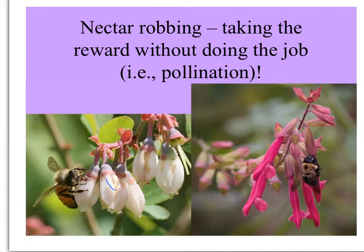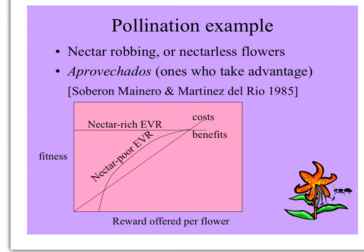Here you can see bees doing this dastardly deed, and here you can see the holes made by the robbers. Here's a bee too small to get to the nectar legitimately — it would have to go in through the front — but it's just going in from the bottom and taking nectar. There's a name in the scientific literature for these cheaters: they're known as aprovechados — ones who take advantage — coined in a paper by Carlos Martínez del Río and Soberón Minero. The fitness of cheaters in a nectar-rich environment isn't that different from others, but in a nectar-poor environment the benefits are much greater.